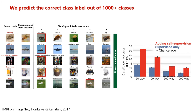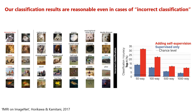What happens with all the remaining incorrect classification cases — how bad are they? We found that even in cases where the ground truth label is not correctly predicted, the classification results are still oftentimes very reasonable, visually and semantically. For example, a camel is wrongly predicted as an Arabian camel, or a fish is wrongly predicted as other types of fish or amphibians.